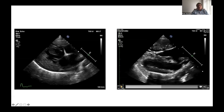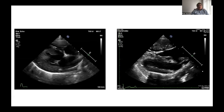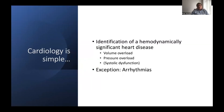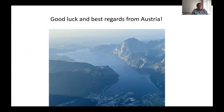These are diseases that might potentially need treatment. The four-chamber view is so important because you can identify hemodynamically significant heart disease — volume overload, pressure overload, or systolic dysfunction — though arrhythmias require an EKG to specify. Many thanks for listening and best regards from Austria. Next session we'll talk about how to get a perfect right parasternal four-chamber view. Bye bye!